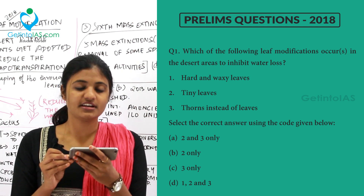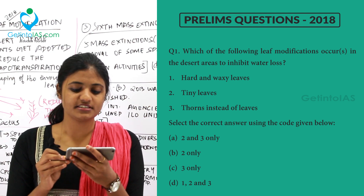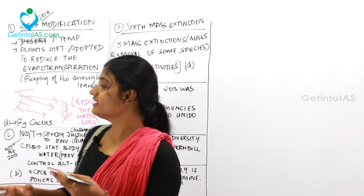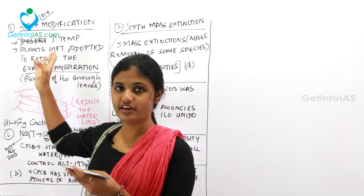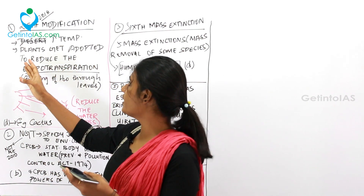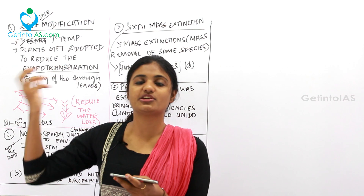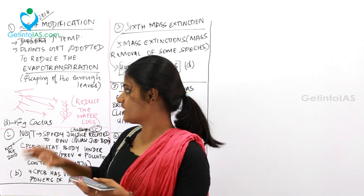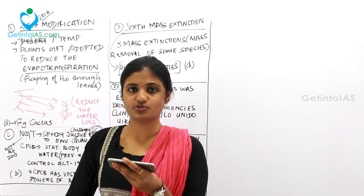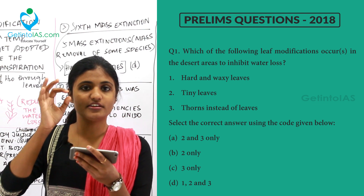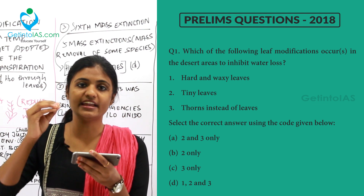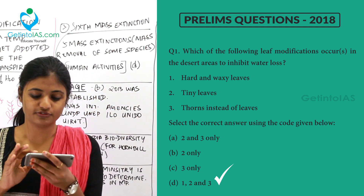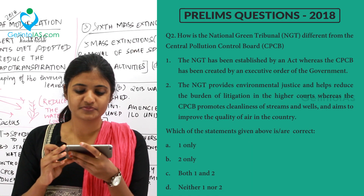In a desert ecosystem the temperature will be very high and the plants get adapted to reduce evapotranspiration — that is, transpiration from the leaves or stomata — and the escaping of water through the leaf should be reduced. Hence all plants in the desert ecosystem will have either tiny leaves, thorn leaves, or hard and waxy leaves. Accordingly, all three answers are correct, so option D is correct for this question.